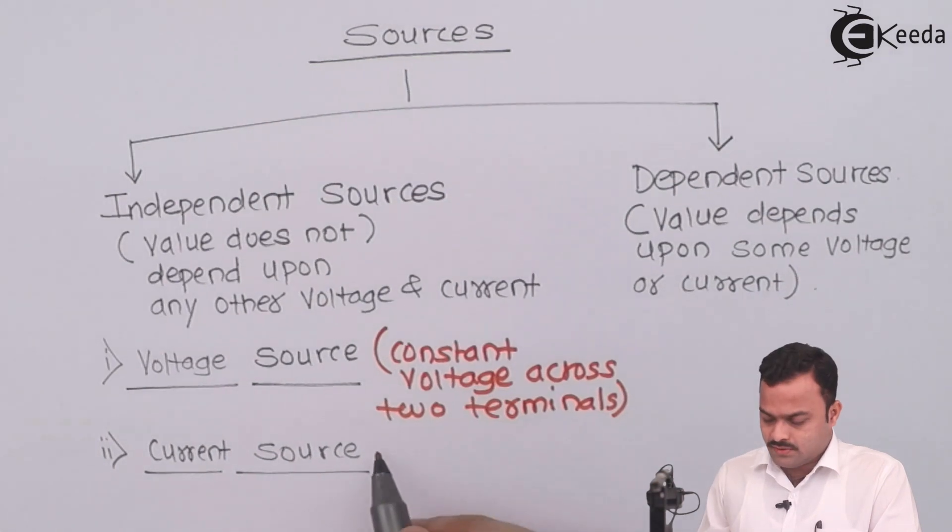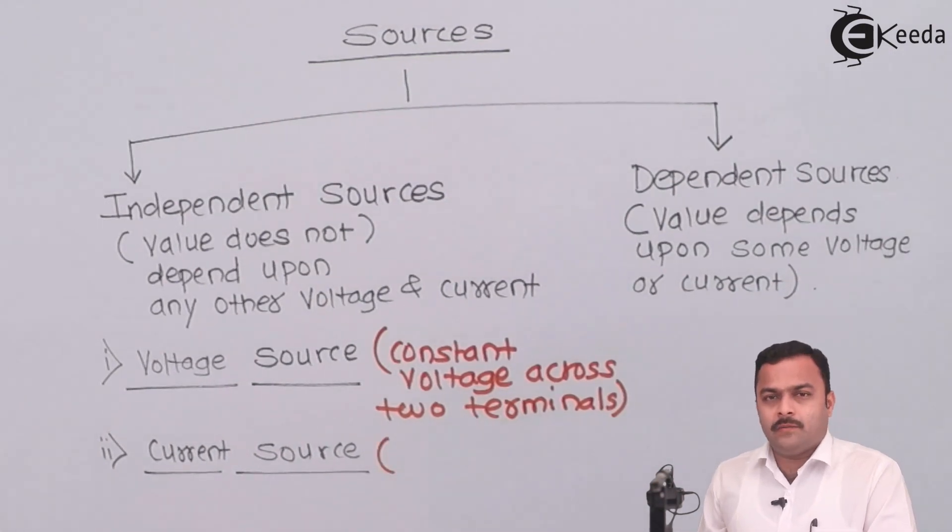Whereas current source, irrespective of amount of voltage across it, it will always maintain constant current in the circuit.